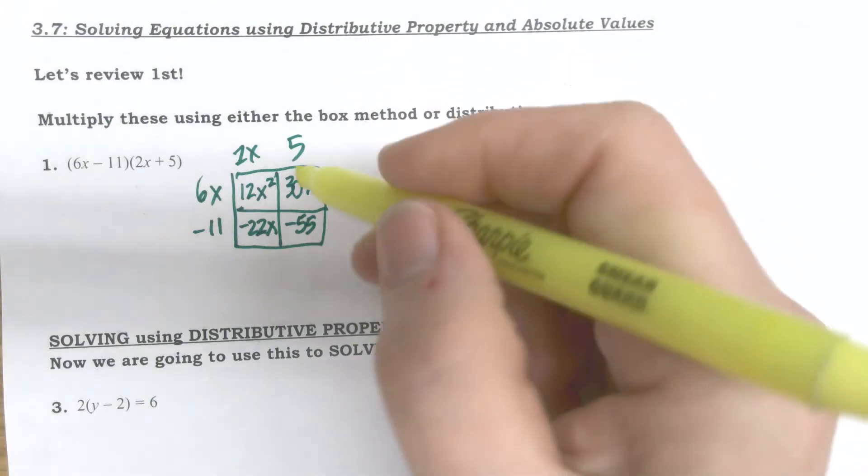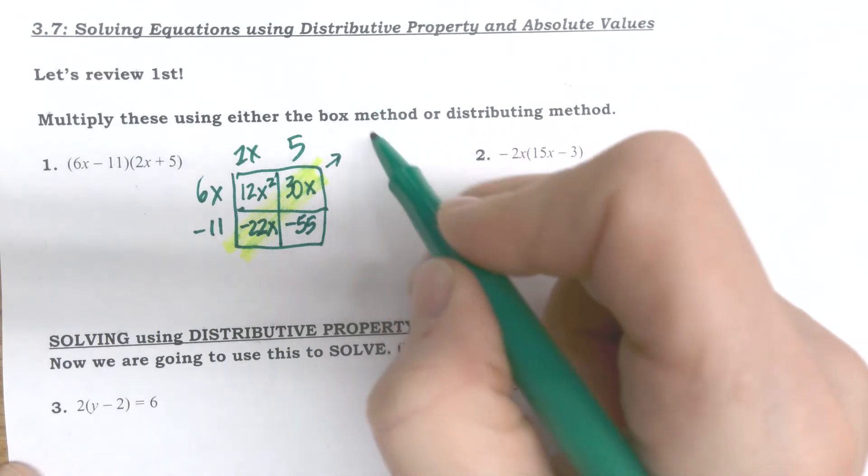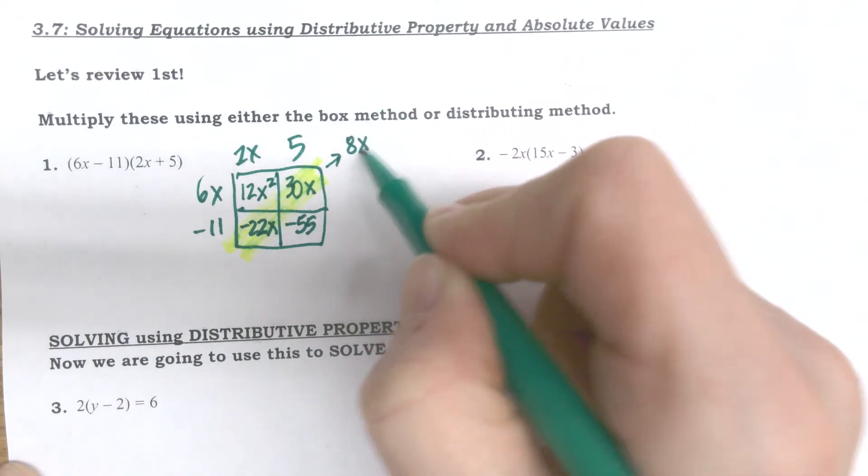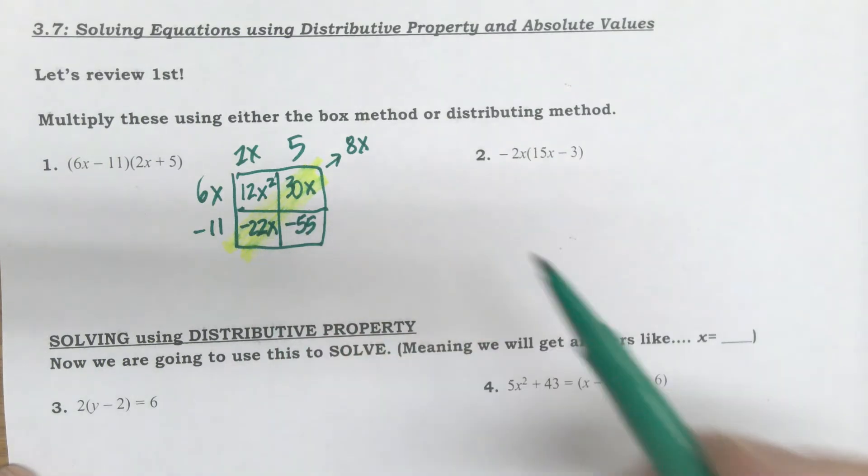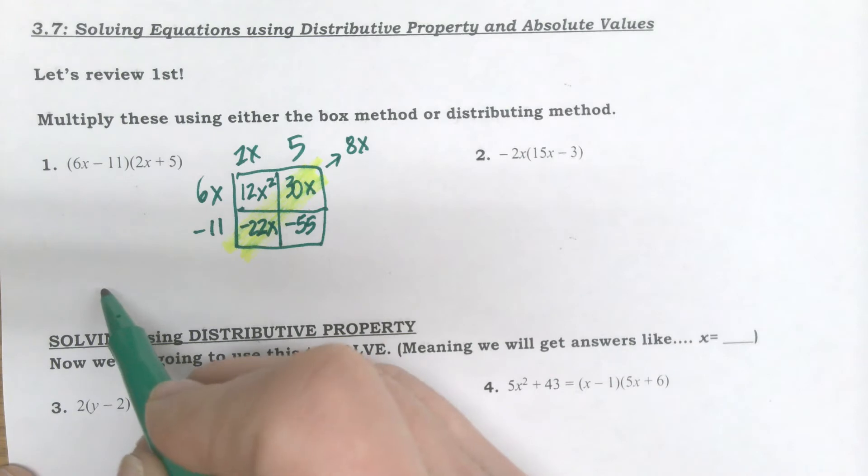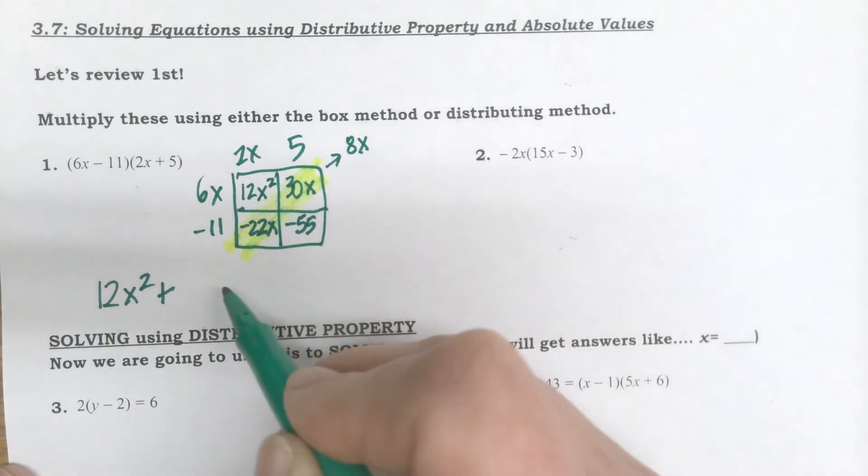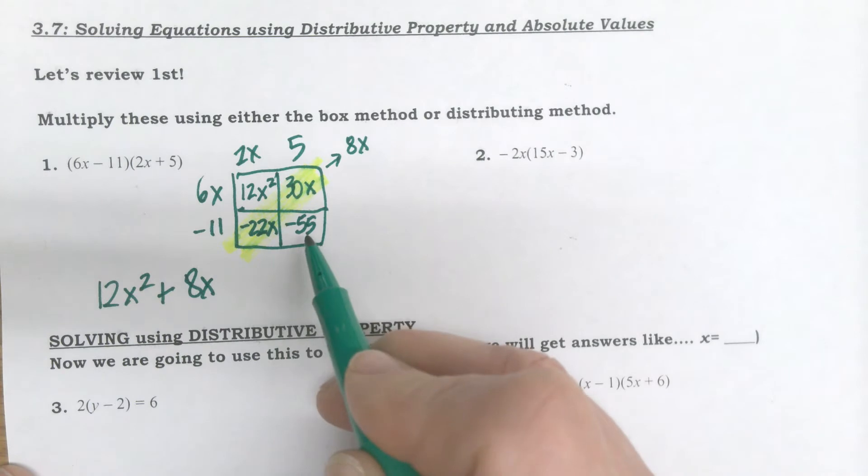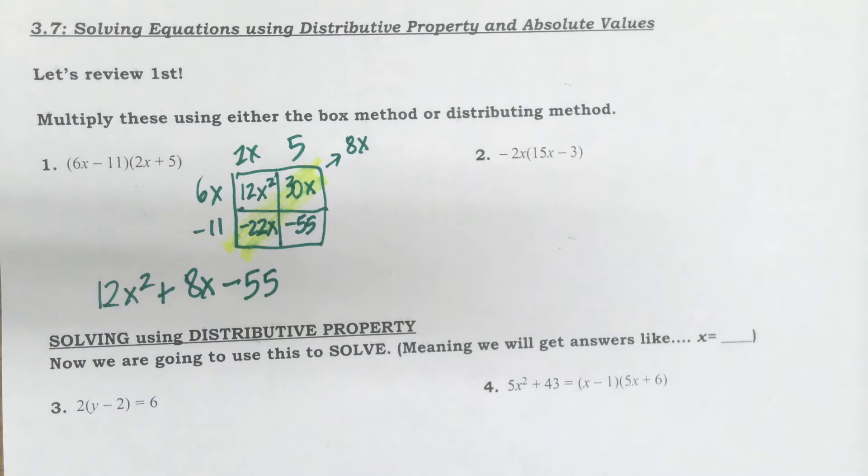So all I'm doing is little multiplication problems. I look for like terms. Got to figure out what thirty x plus negative twenty-two x is. Thirty x plus negative twenty-two x is eight x. If you don't believe me, plug it in your calculator. When I write this out, I write all of the pieces because I'm adding these all together. So it's twelve x squared plus the combination of these two was positive eight x plus negative fifty-five, which I write as minus fifty-five. And so then I have my simplified form.